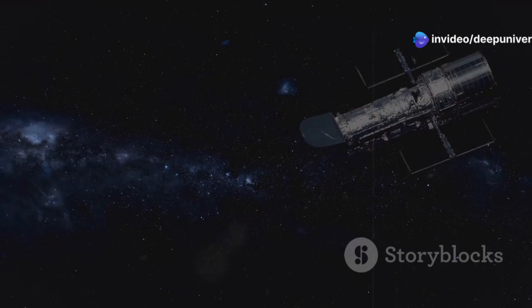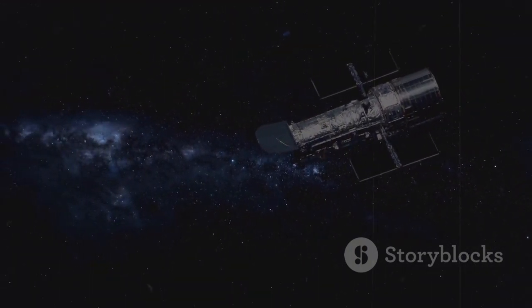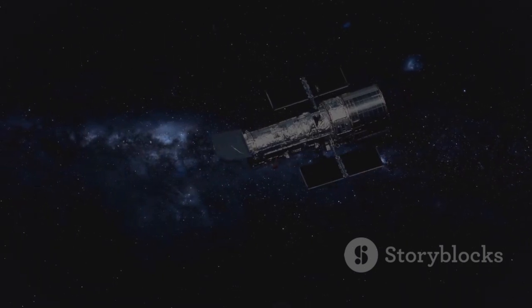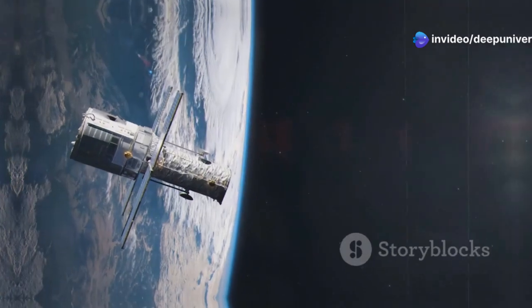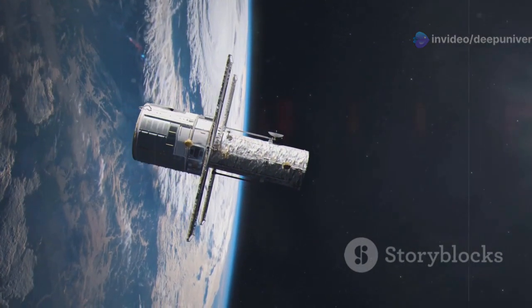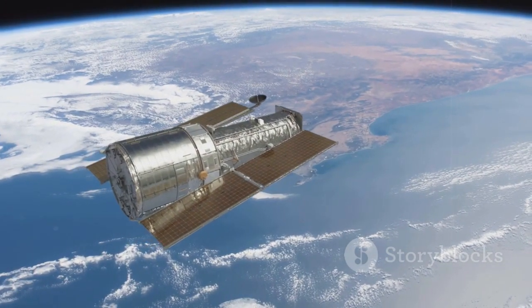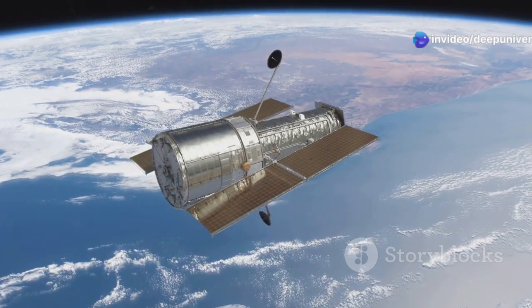The launch of the Hubble Space Telescope in 1990 marked a new era in astronomy. Hubble's advanced optics and position above Earth's atmosphere allowed it to capture unprecedented images of the universe. Hubble orbits above Earth's atmosphere, free from the distortions caused by air and weather. This unique vantage point gives it an unobstructed view of the cosmos, enabling it to see further and clearer than any ground-based telescope.